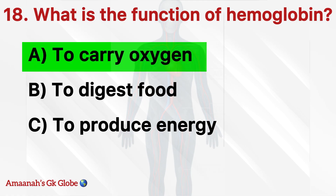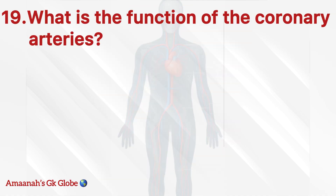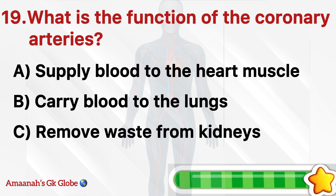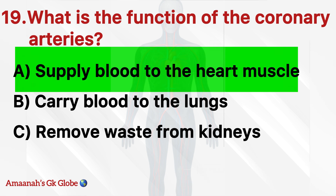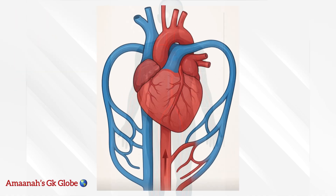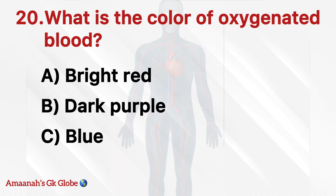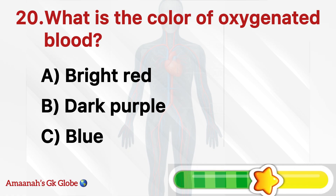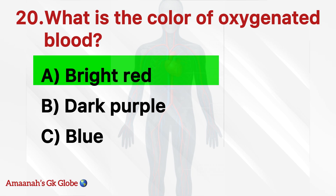To carry oxygen. What is the function of the coronary arteries? Supply blood to the heart muscle. What is the color of oxygenated blood? Bright red.